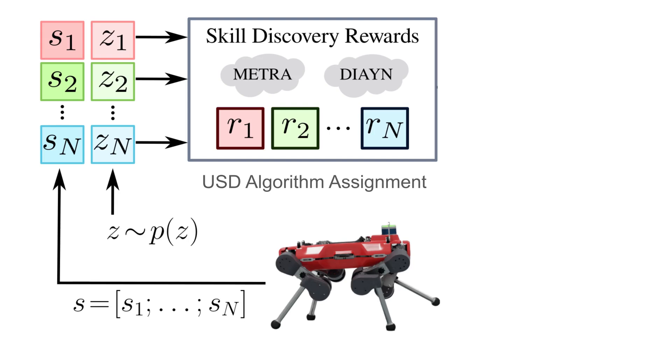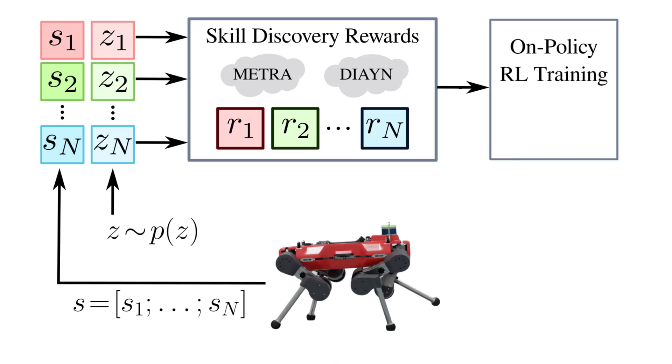We leverage their complementary strengths. METRA for maximizing state coverage on factors like position, and DIANE for learning highly distinguishable skills for factors like orientation. This process yields a separate intrinsic reward for each factor, which can then be used to train the policy using standard on-policy RL algorithms like PPO.